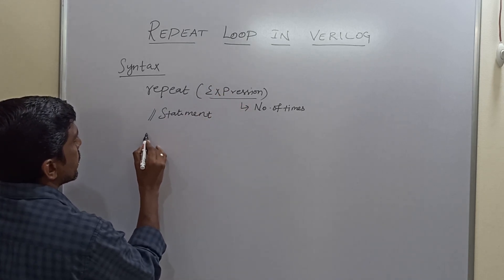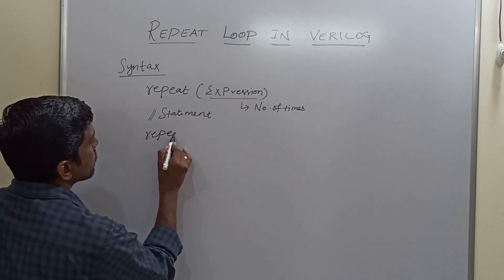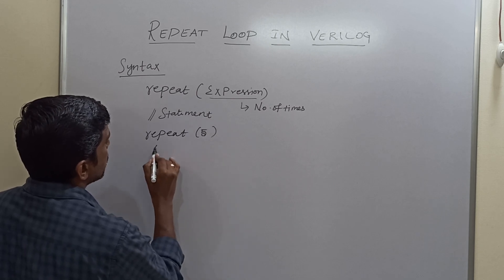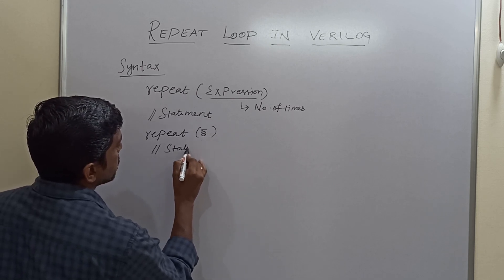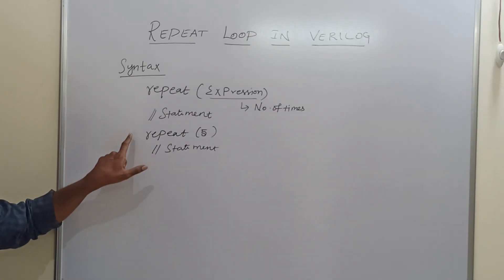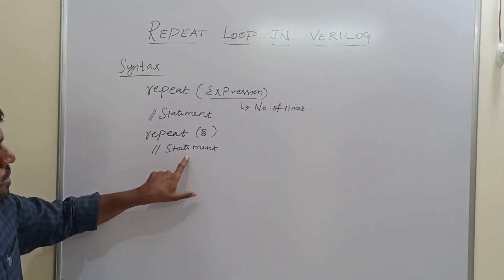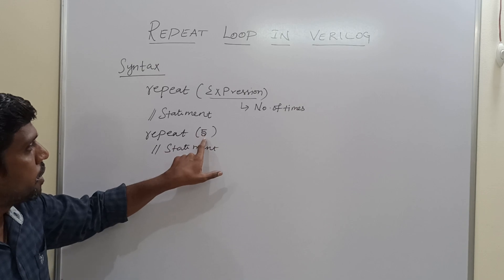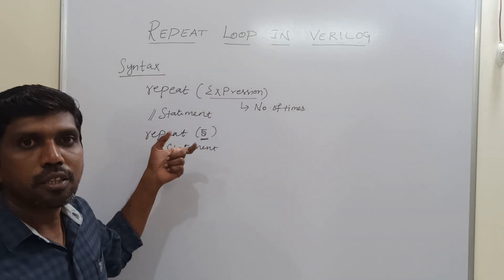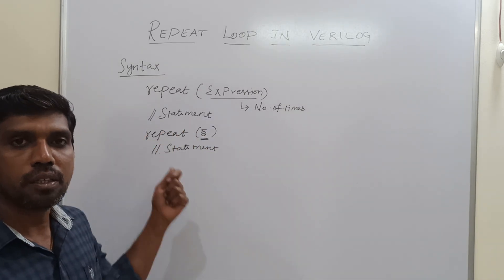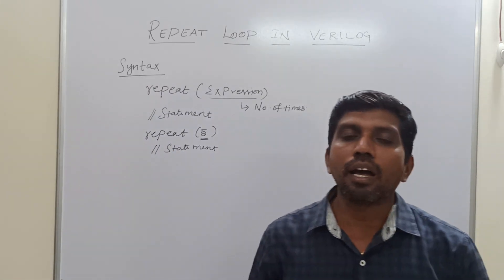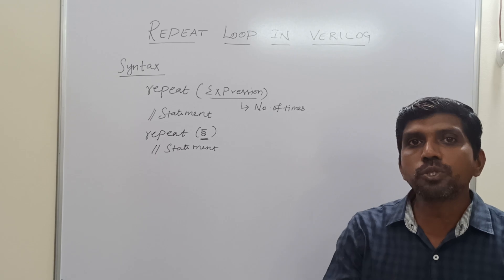I will rewrite this syntax with an example. Repeat (5) then statement. This repeat loop will repeat the block of statements some defined number of times — here the defined time is five, so five times this loop will execute. This repeat loop blindly runs the code as many times as you specify, so it is called a repeat loop.